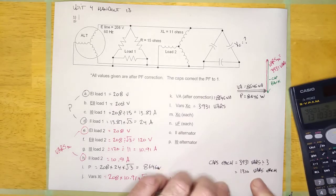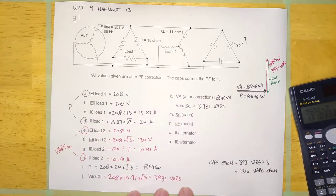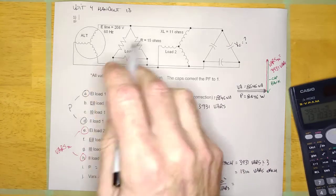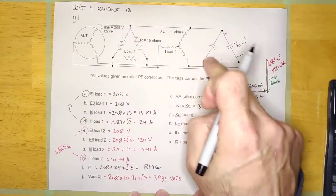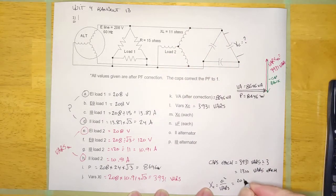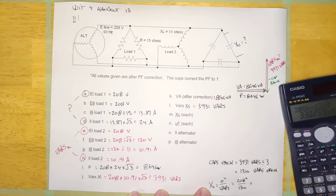The next thing is to figure out how many ohms they are each. XC equals E squared over vars. The voltage dropping across them is 208 since it's delta — if it were Y it would be 208 divided by root 3. So it's 208 squared over 1,310.